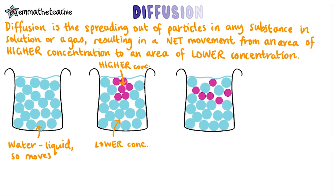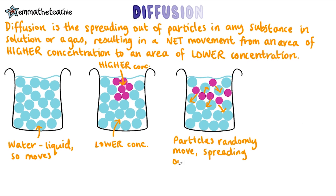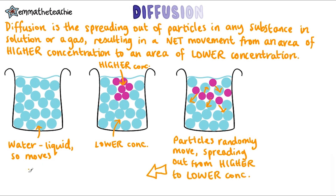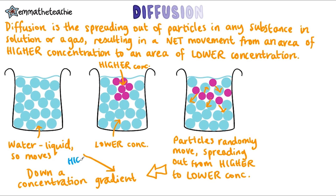Because it is in solution, the food colouring particles can also move around. The movement of these particles is random and they spread out from a higher concentration to a lower concentration. This can also be described as down a concentration gradient, as they're moving from high to low. So we can show it like this.